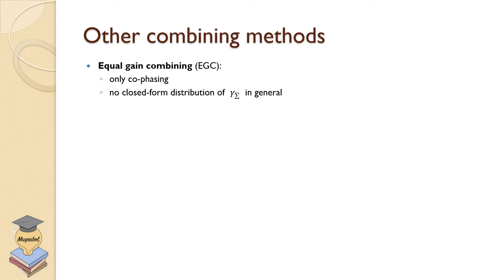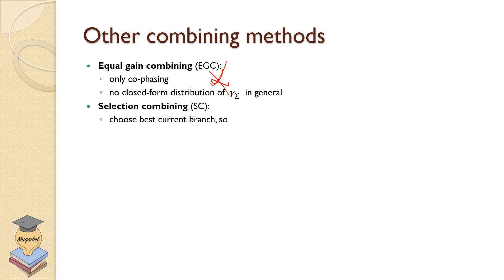For the case of equal gain combining, we only do co-phasing — no scaling by alpha. We just adjust the phases and equally combine them. There is no closed-form distribution of the output signal-to-noise ratio gamma_b for equal gain combining. For selection combining, we choose the best branch.